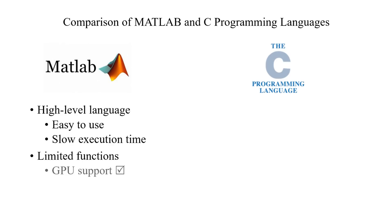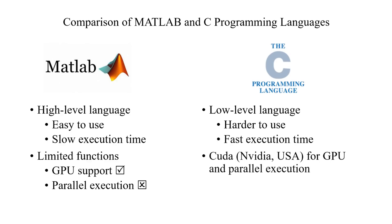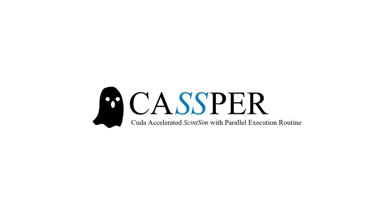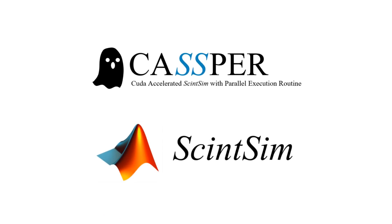For example, although MATLAB does support GPU operation, it doesn't support parallel execution. I decided to make my program in the C programming language, since it gives much lower level control of critical CPU operations. The CUDA plugin, developed by NVIDIA — the same company which creates the world's highest powered graphics cards — was used to give a similar level of control over the GPU. Rather than developing all of the scintillation code myself from scratch, I instead translated some SintSim code from MATLAB into C. I called my program CASPer, or CUDA Accelerated SintSim with Parallel Execution Routine.